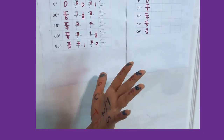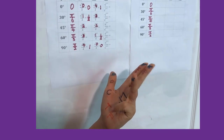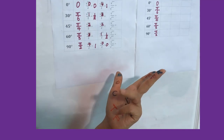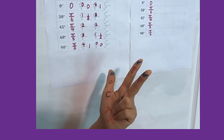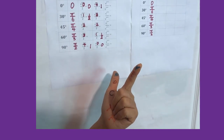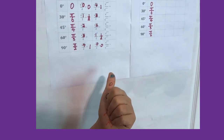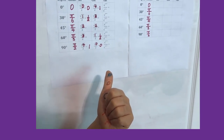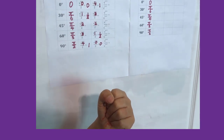Let's do that one more time. Sine 90 equals square root of 4 over 2, equals 1. Sine 60 equals square root of 3 over 2. Sine 45 equals square root of 2 over 2. Sine 30 equals square root of 1 over 2, means 1 over 2. Sine 0 equals 0.